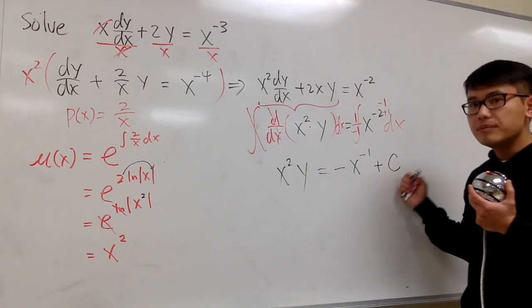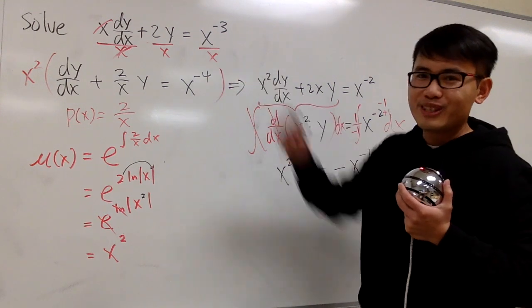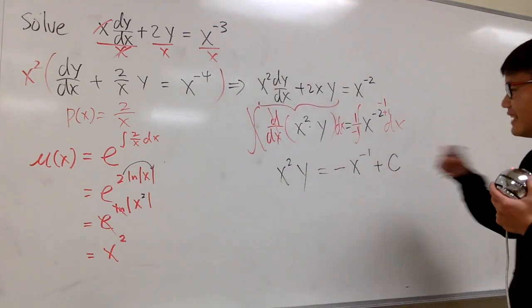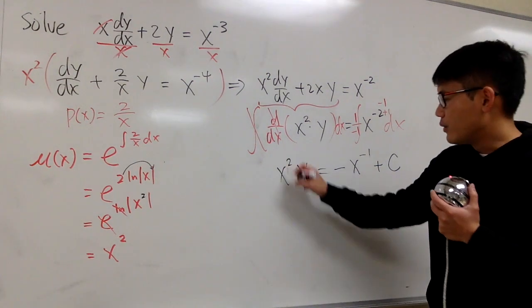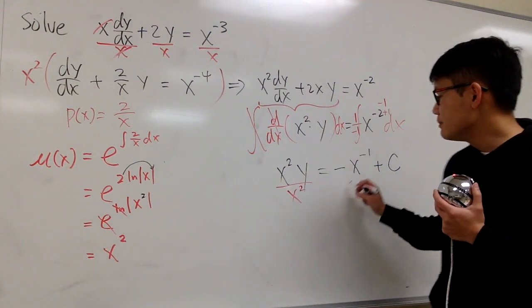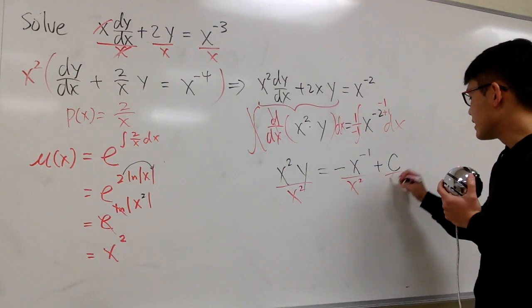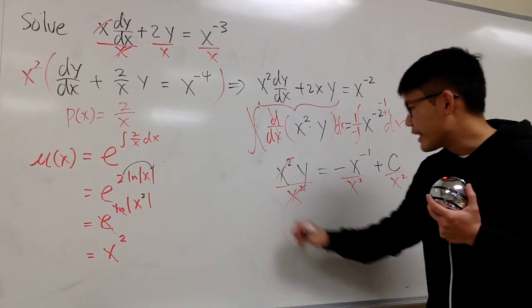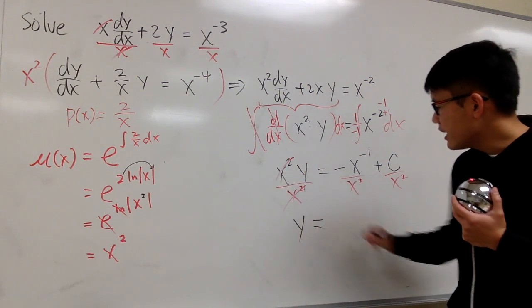And then right here, I will just add my constant on the right-hand side. This constant is needed because we need to solve the original differential equation. All right. Let's solve for the y. Of course, we can just go ahead and divide everything by x to the second power. This and that will cancel. And then we have the function y in terms of x.